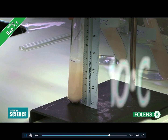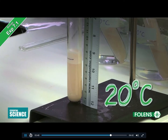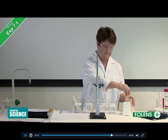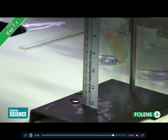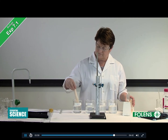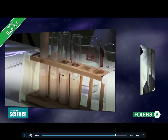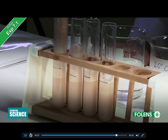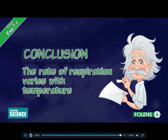Results are recorded for each temperature: 10 degrees Celsius, 20 degrees Celsius, 30 degrees Celsius, and 40 degrees Celsius. Using a table in your laboratory notebook, fill in your own results when you do the experiment yourself. A bar chart of the results could also be drawn.